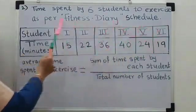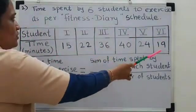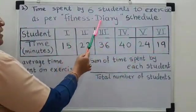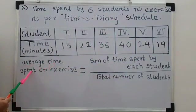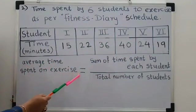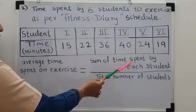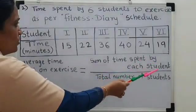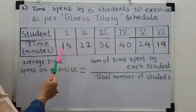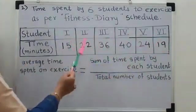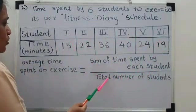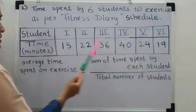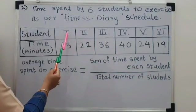We have to find out average time spent by the student for fitness diary. Average time spent on exercise is equal to sum of time spent by each student. Means, we have to add all these numbers divided by total number of students.